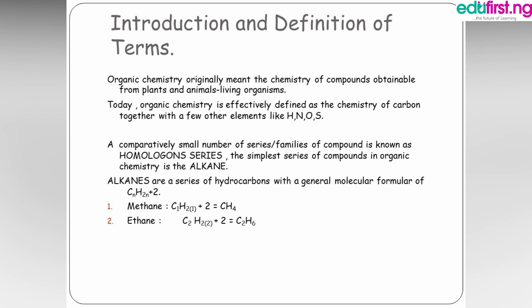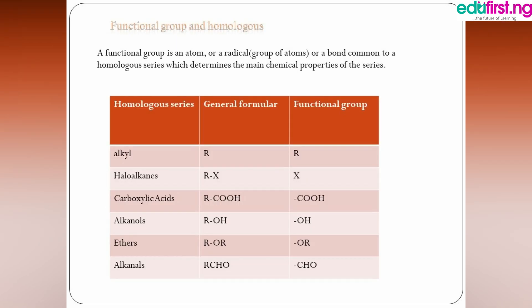A comparatively small number of series of families of compounds is known as a homologous series. The simplest series of compounds in organic chemistry are alkanes, and they have the molecular formula CnH2n+2, where n is the number of terms. If n equals 1, we have methane with the molecular formula CH4. For n equals 2, we have ethane with the molecular formula C2H6, and for n equals 3, we have propane.